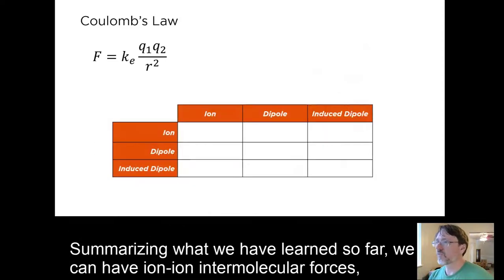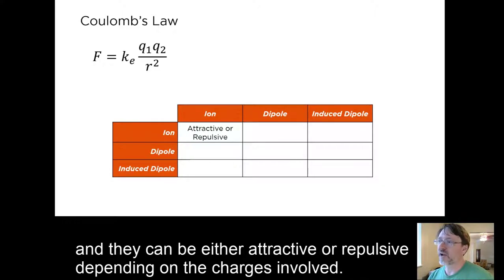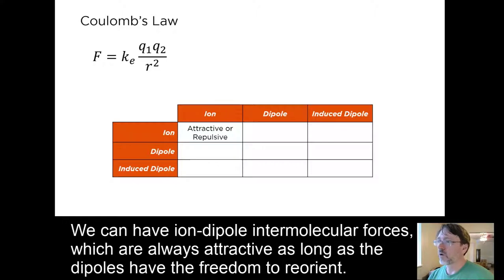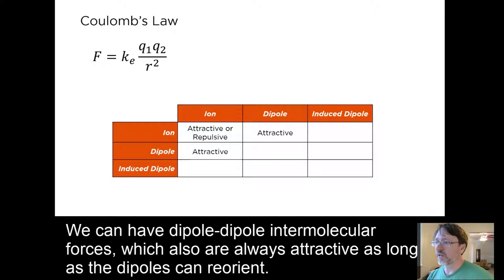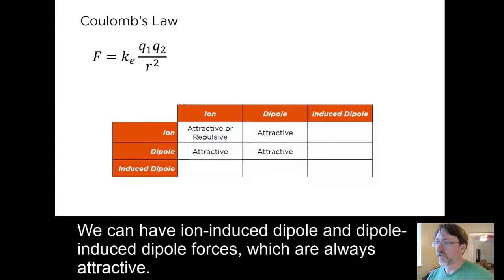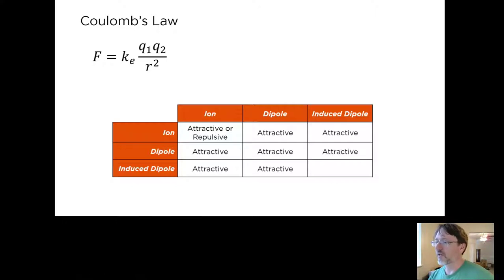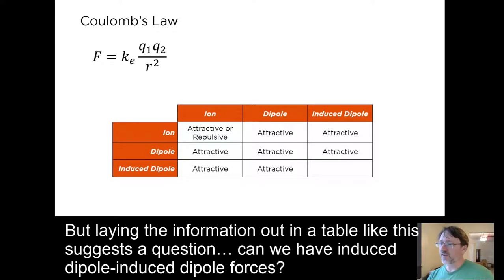Summarizing what we've learned so far: we can have ion-ion intermolecular forces, which can be either attractive or repulsive depending on the charges involved. We can have ion-dipole intermolecular forces, which are always attractive as long as the dipoles have the freedom to reorient. We can have ion-induced dipole and dipole-induced dipole forces, which are always attractive. But laying the information out in a table like this suggests a question: can we have induced dipole–induced dipole forces?